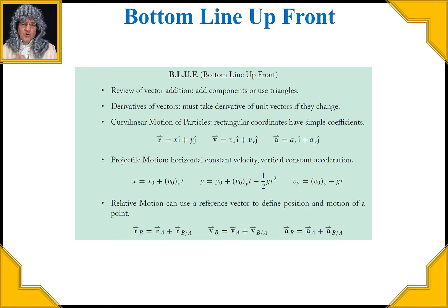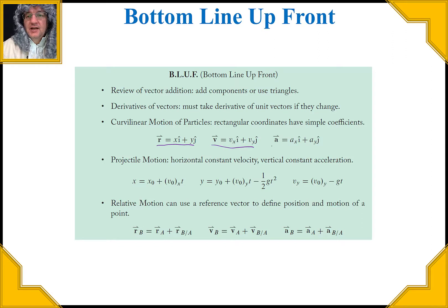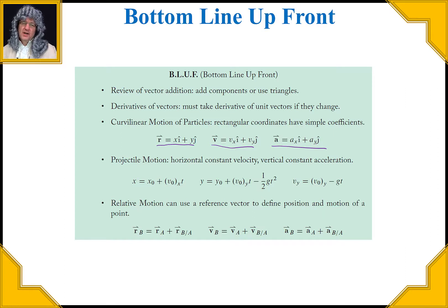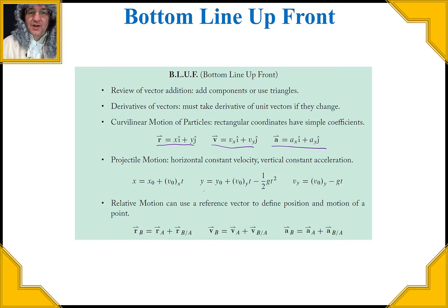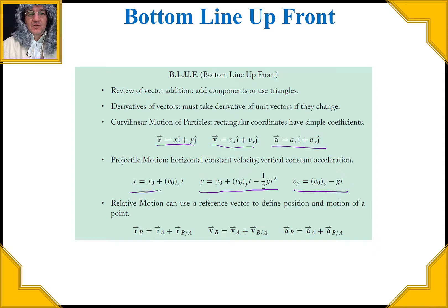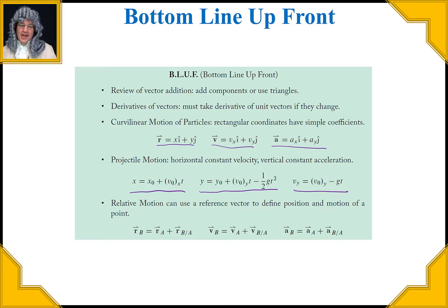We're going to deal with rectangular coordinates in two dimensions, so we have a position vector, a velocity vector, and an acceleration vector in x and y using i and j as the unit vectors. We're going to deal with projectile motion, which is a special case — a constant acceleration problem in the vertical direction and a constant velocity problem in the x direction. We'll also look at relative motion using vectors.